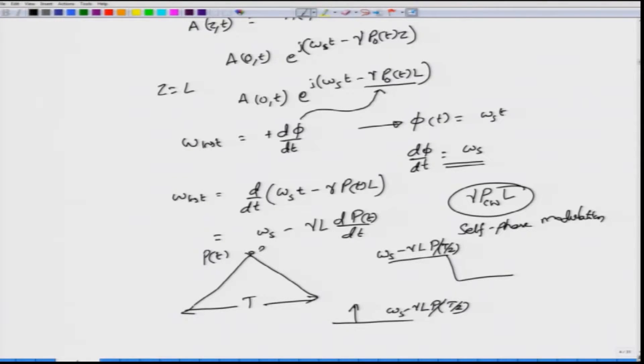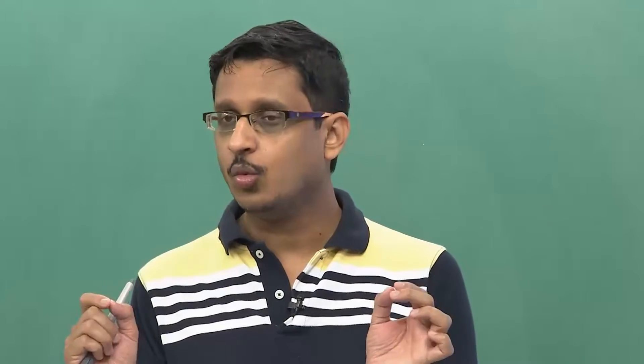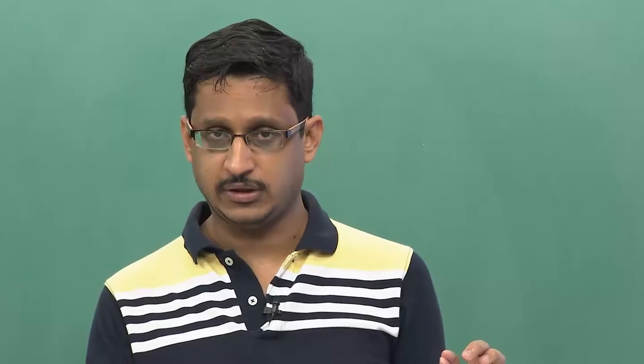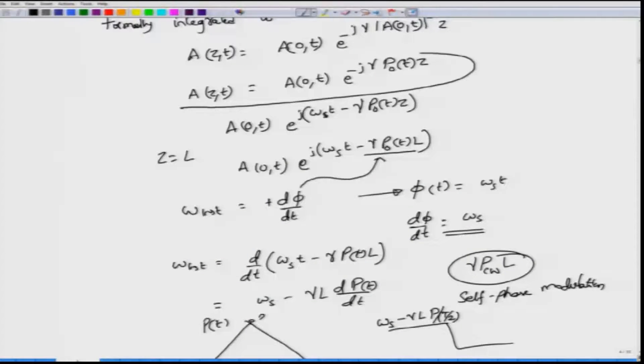In the original pulse spectrum you had omega_s and a certain bandwidth associated with the pulse. Because of this chirping, you increase or change the frequency spectrum. This is very important: in contrast to the dispersion case with no nonlinearity, the pulse only spread in time with no change in frequency spectrum. In self-phase modulation, there is a change in the frequency spectrum, but the magnitude of A(z,t) equals the magnitude of A(0,t), meaning in the time domain the pulse has not really changed.